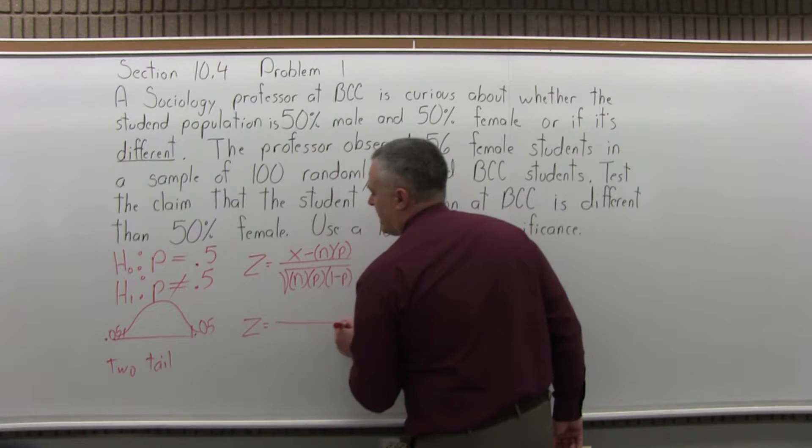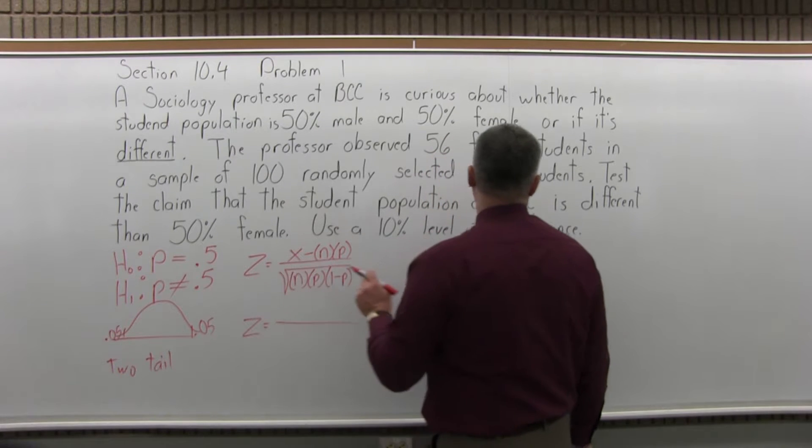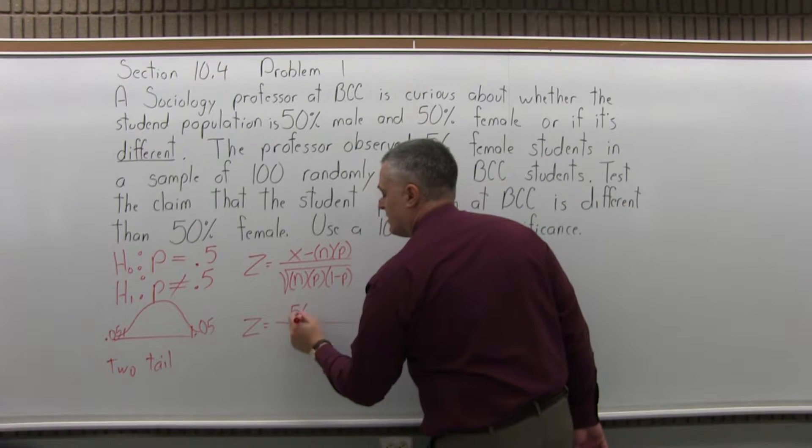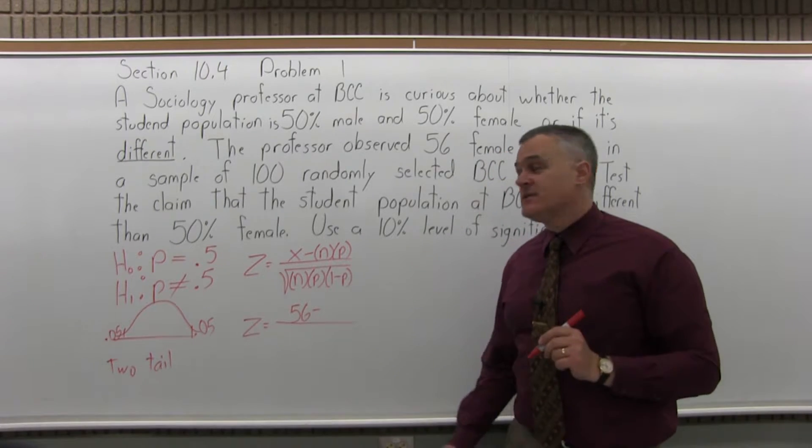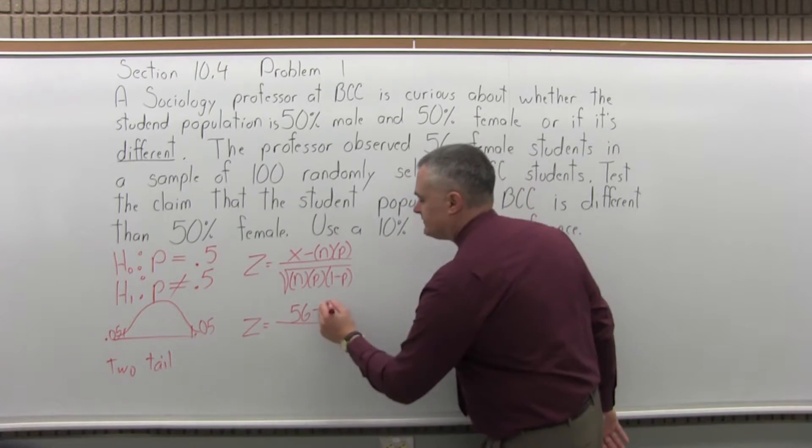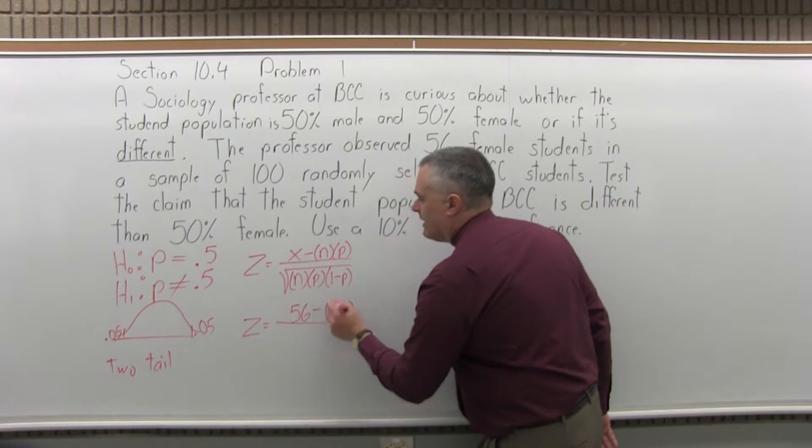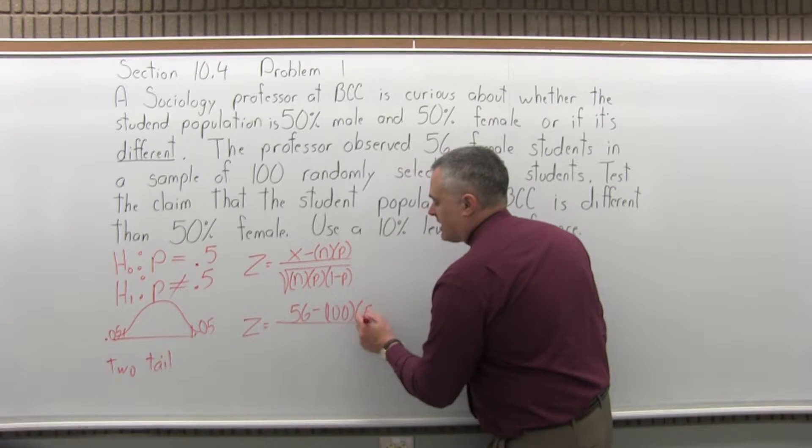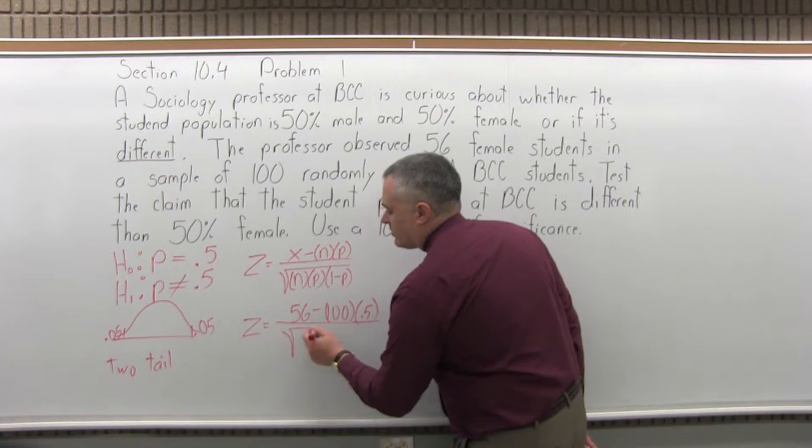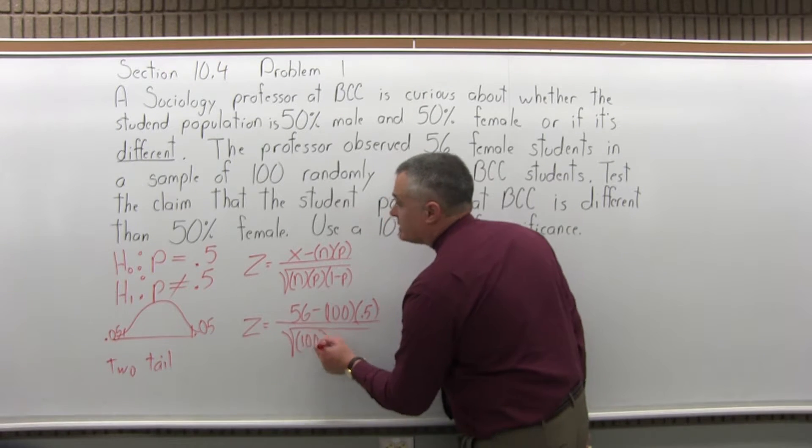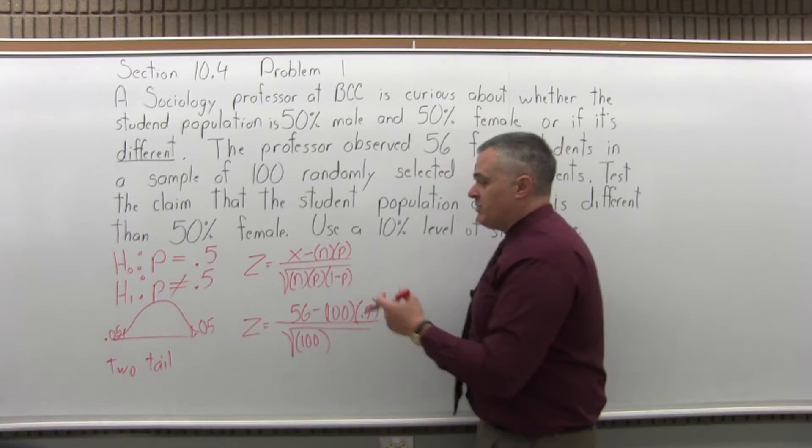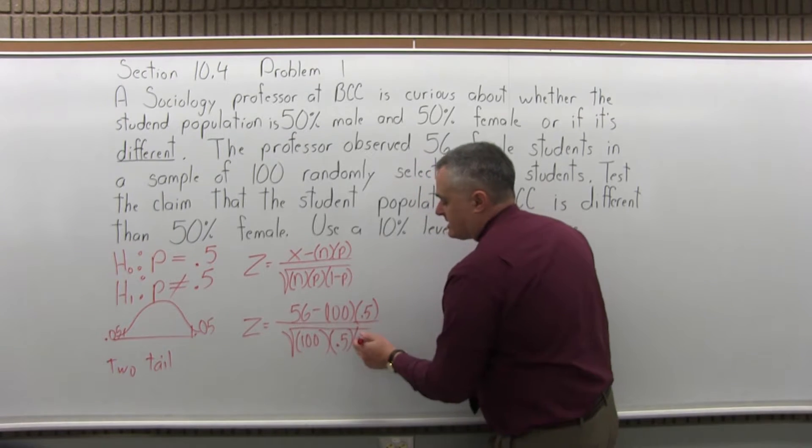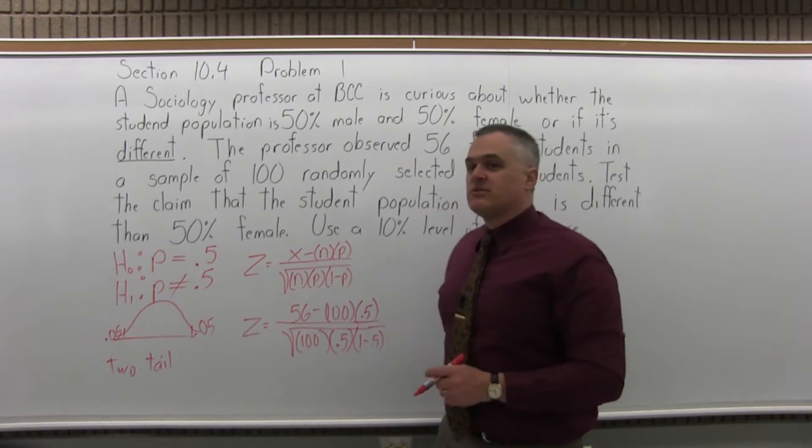So z equals x. The observed number of successes is 56 female students, minus n, the size of the sample is 100, times p. The proportion that we're testing is 0.5. And in the denominator, you will have the square root of n times p times 1 minus p. So n is 100, p is 0.5, and then 1 minus 0.5.